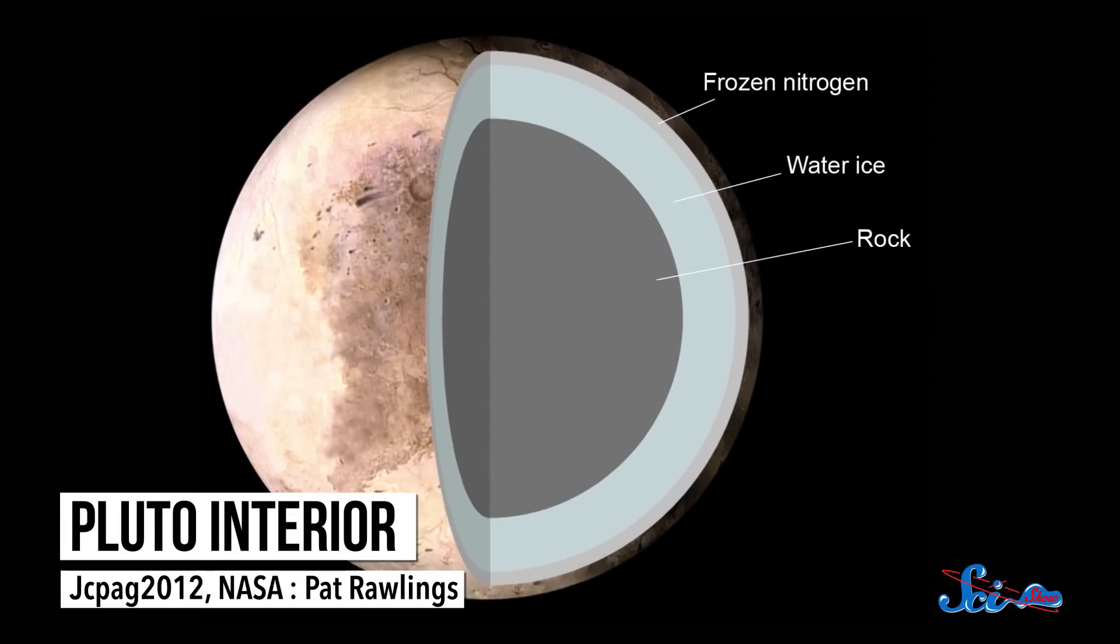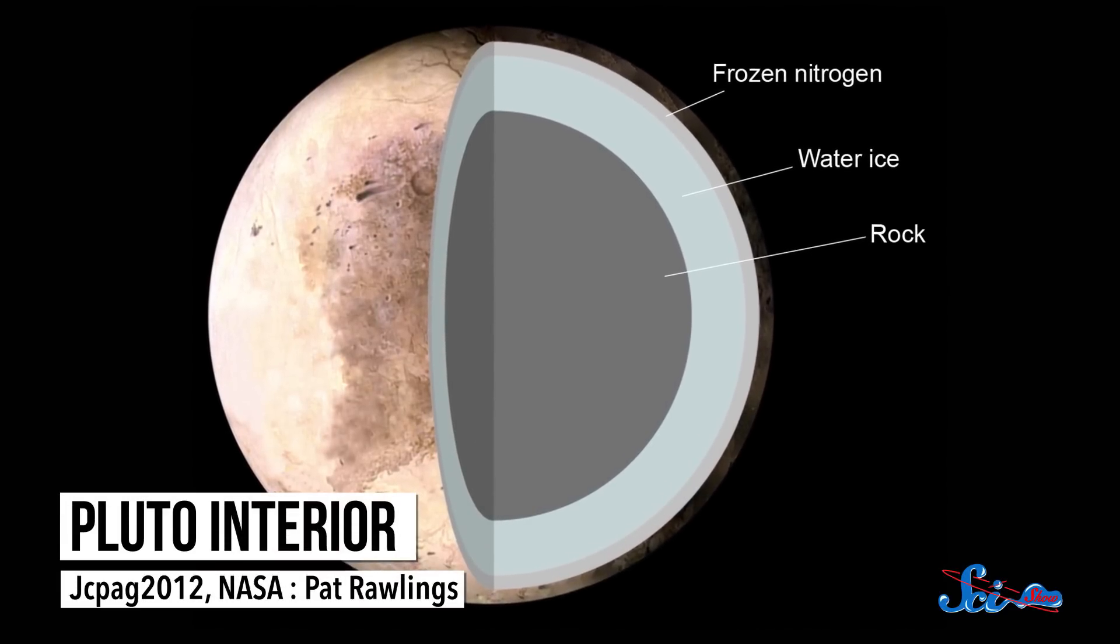From years of observations, we already know that Pluto has plenty of water ice, plus nitrogen and methane, and scientists think this shiny patch is probably frozen molecular nitrogen.